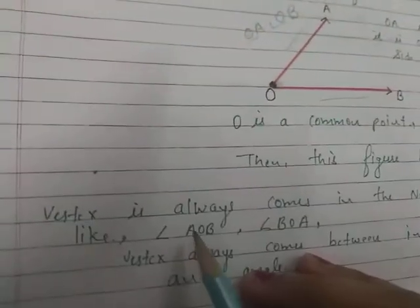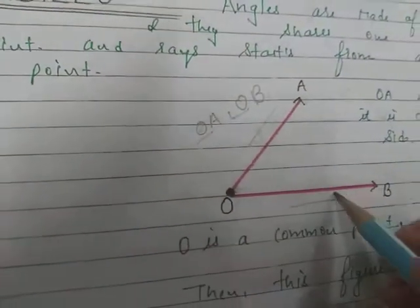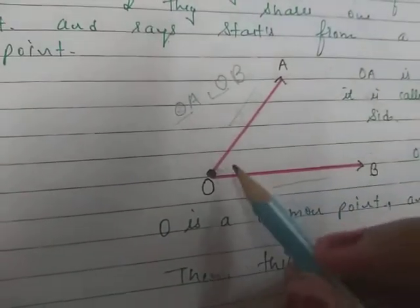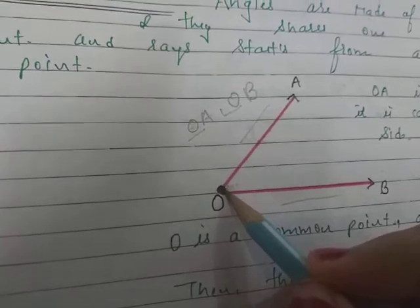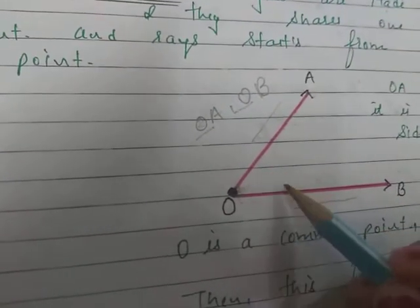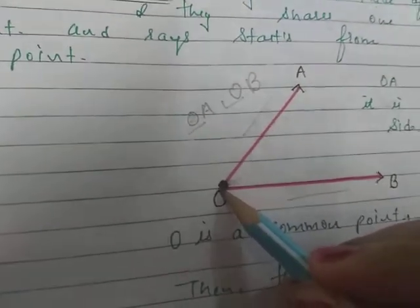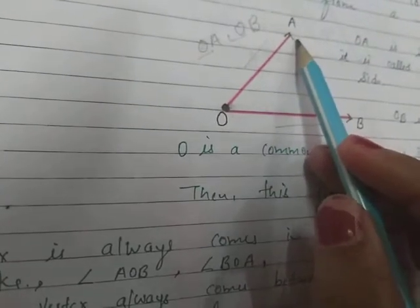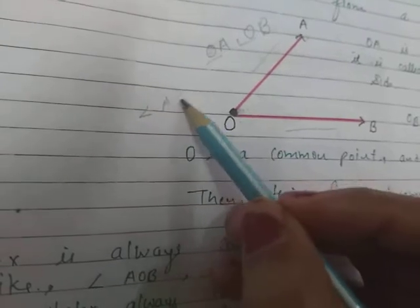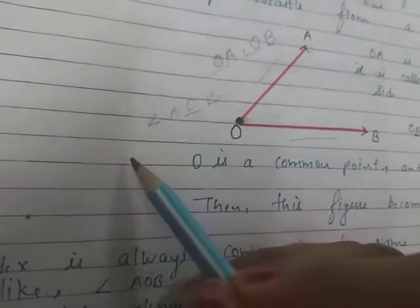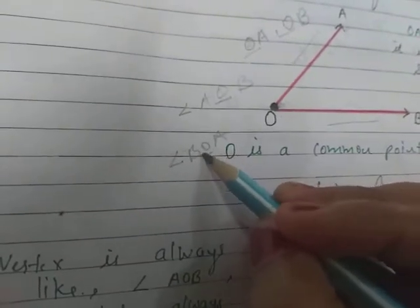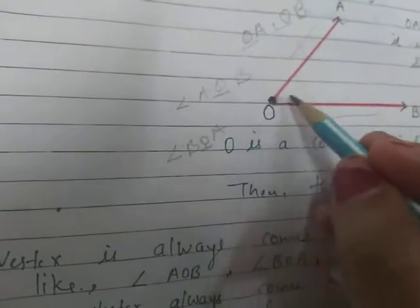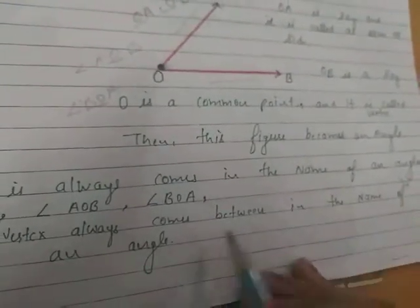We can also name angles. Whenever we write the name of any angle, the common point — the vertex — always lies in the middle. For example, if we write angle AOB, O is between A and B. Similarly, if we write angle BOA, O is still the common point. So the vertex always comes between the rays in the name of any angle.